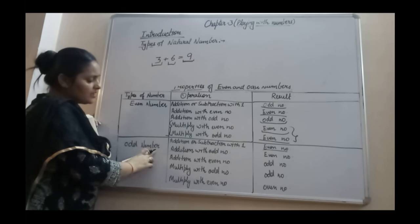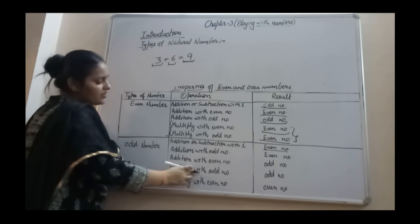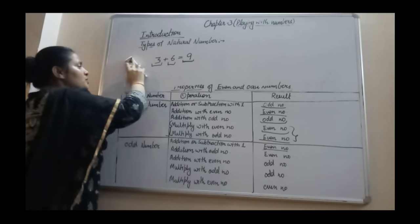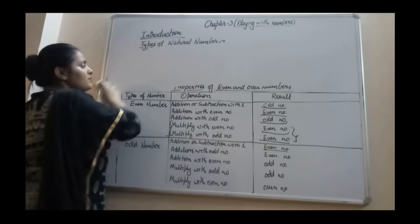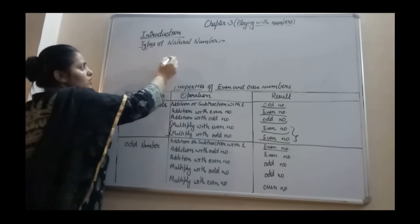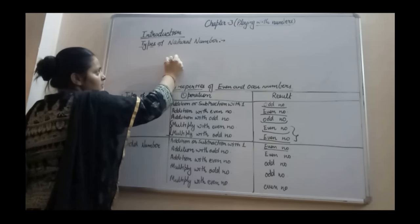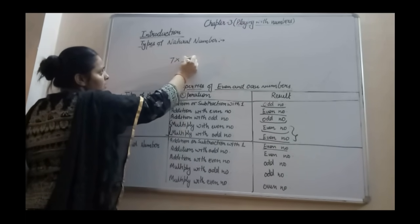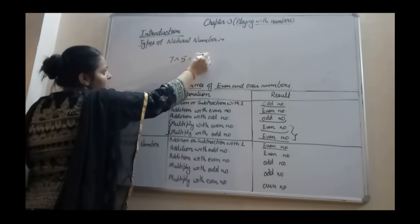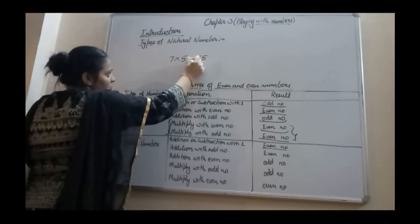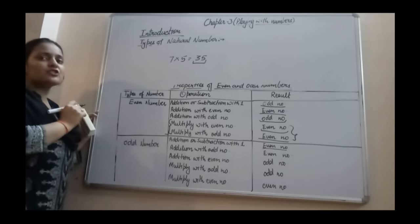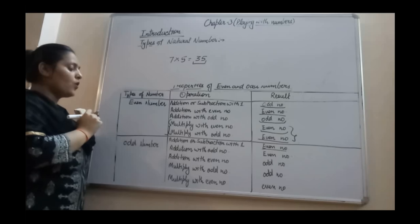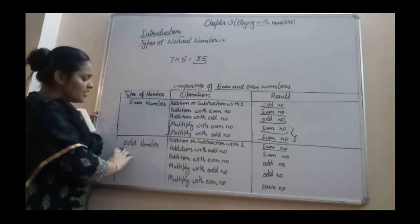Next property: odd number multiplied by odd number. When you multiply an odd number with another odd number, for example 7 into 5 — both are odd numbers — your answer is 35, which is also an odd number. So the product of two odd numbers is always an odd number.